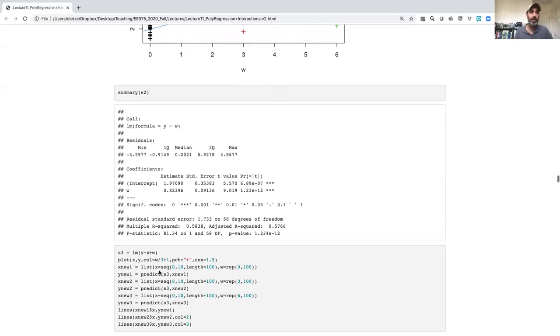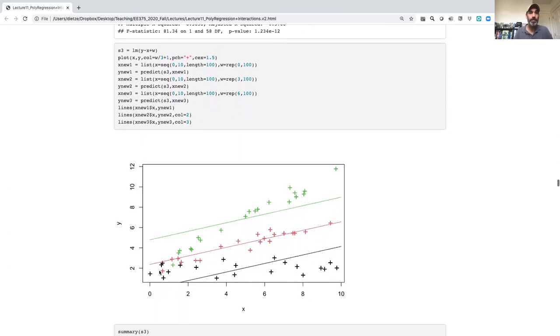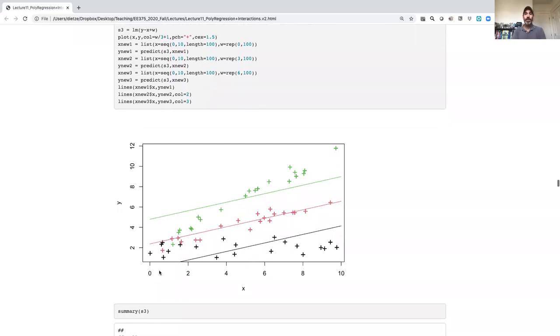And we put x and w together. Here's what we get. And so, again, using the same trick I used in the last video, where I made predictions at this low, medium, and high value of w in terms of looking at the relationship between x and y.